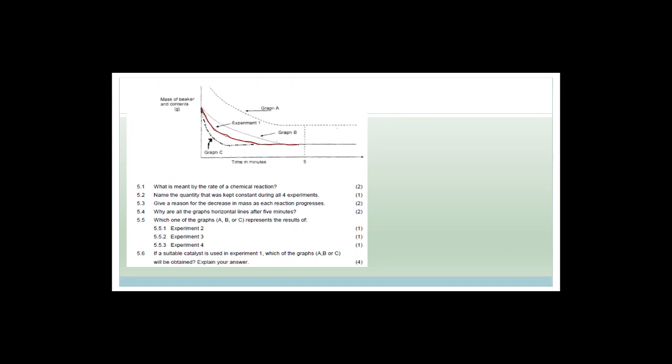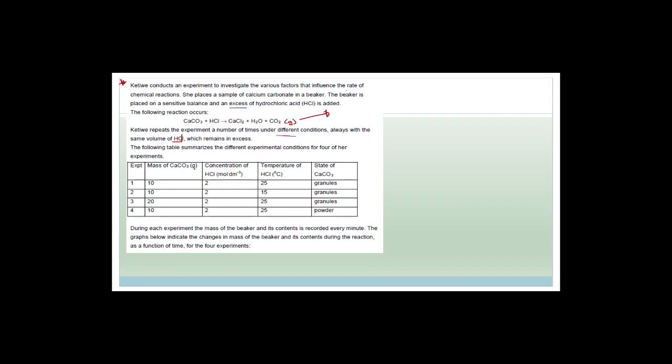We have graph A, graph B — this is experiment one — and graph C. First, they ask: what is meant by the rate of a chemical reaction? Obviously that's the rate at which the reaction occurs. Then they ask: name the quantity kept constant during all four experiments. The concentration of HCl was kept constant.